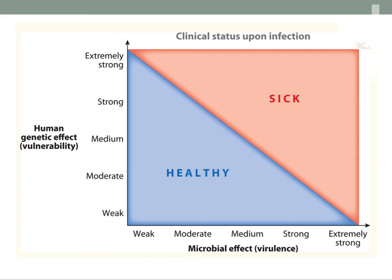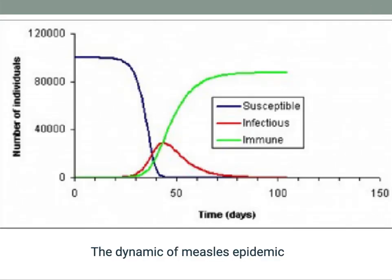The respective contributions of host and microbe genetics to the clinical outcome of infectious disease can be illustrated as follows: an individual with strong genetic vulnerability may develop clinical disease following infection with a less virulent microbe, whereas an individual with low genetic vulnerability may develop clinical disease only if infected with a highly virulent microbe. The infection process itself is genetically controlled with resistant and susceptible individuals. Some of the genetic epidemiological data obtained was strong, including the classic twin studies in tuberculosis.